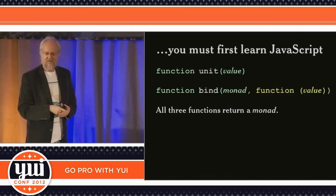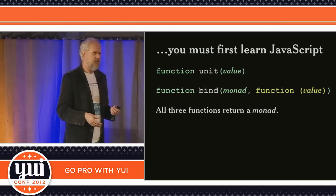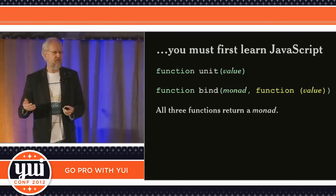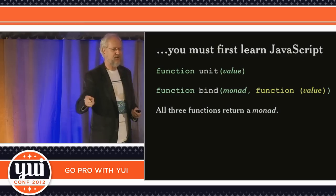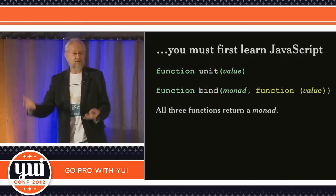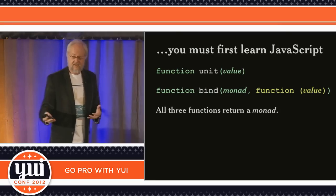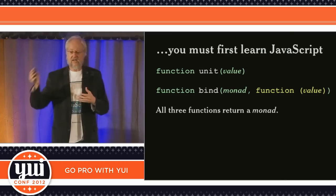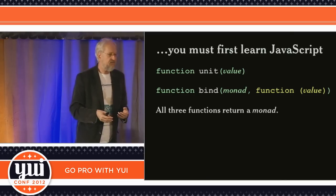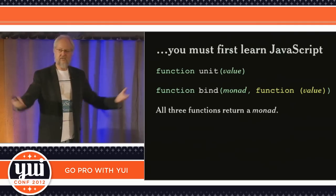So you look at the unit function. The unit function takes a value and returns an object. You might be thinking, well, that sounds like a constructor. And yes — that is a constructor. That's all it is. So the magic must be somewhere else — it must be in the bind function. The bind function takes a monad and takes a function that takes a value like the value that was passed into the unit function, and it also returns a monad. And that's it. That's monads.